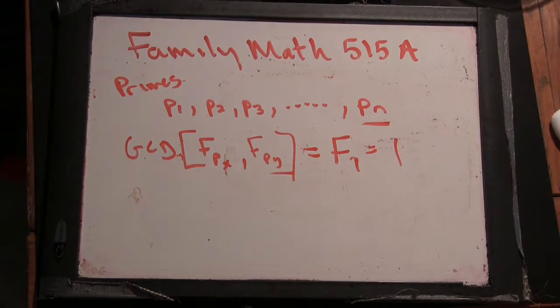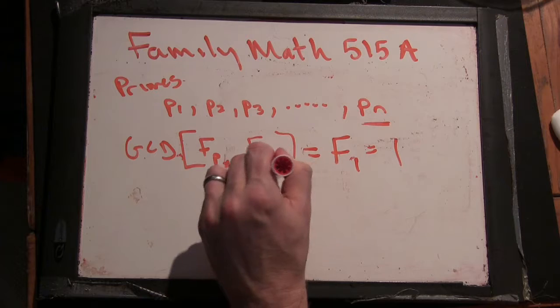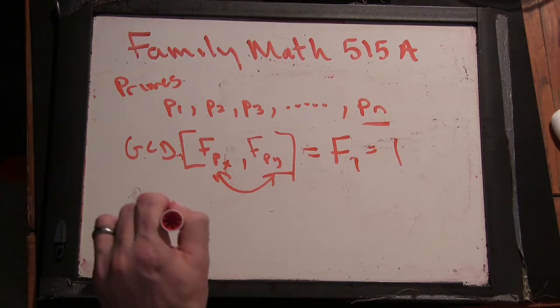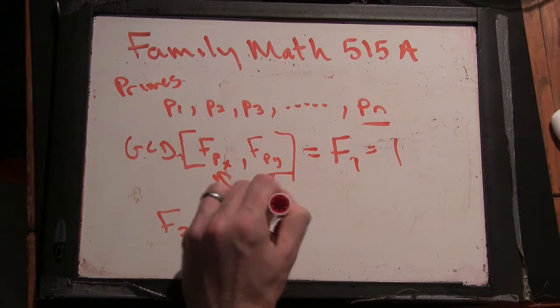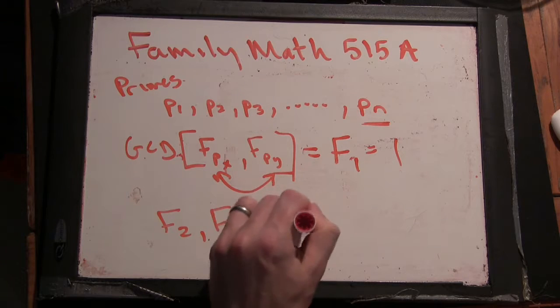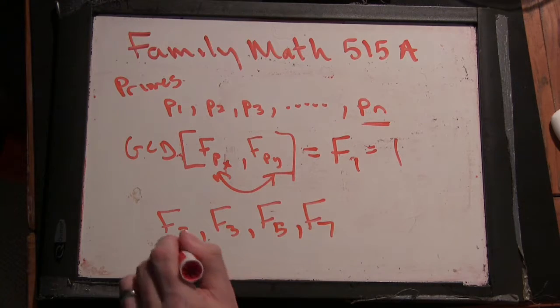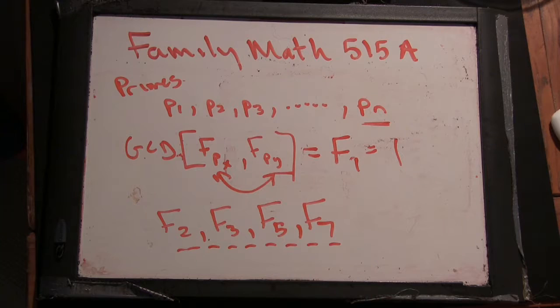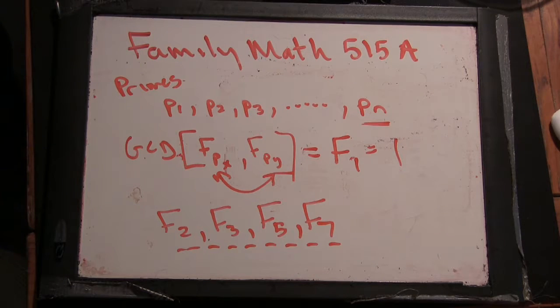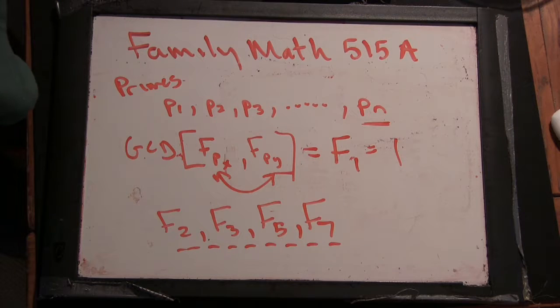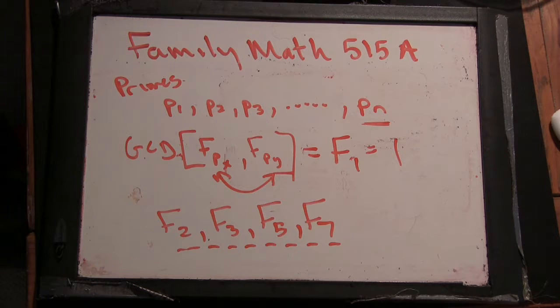What is that going to say about each one of these Fibonacci primes? Fibonacci 2, Fibonacci 3, Fibonacci 5, Fibonacci 7. What can we say about these numbers? Well, none of them have any factors in common. None of them have any factors in common except for 1.